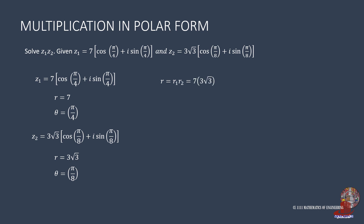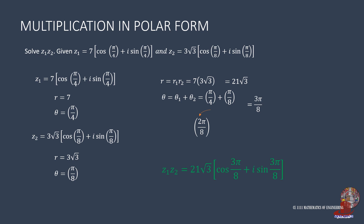Multiplying the moduli: 7 times 3 root of 3 gives 21 root of 3. Theta is pi over 4 plus pi over 8. Taking the LCD, transform the first argument into 2 pi over 8, then add them to get 3 pi over 8. The resulting polar form is 21 root of 3 times cosine of 3 pi over 8 plus i sine of 3 pi over 8.